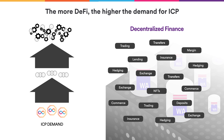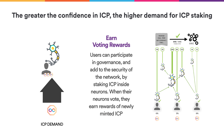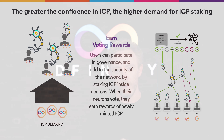But of course, that's not all. The practice of neuron staking will also create demand for ICP. Simply put, by staking ICP inside the network nervous system, users can earn voting rewards in exchange for making their ICP non-transferable for a while. As general confidence in ICP increases, more people will wish to stake ICP within the network nervous system in order to earn voting rewards.